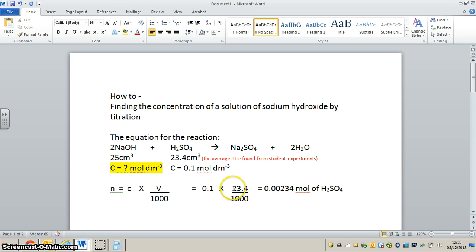Here is the volume used, 23.4, and here is 1000. If we do that calculation, we find that 0.00234 moles of sulfuric acid have actually reacted with the sodium hydroxide. So how do we progress this forward?